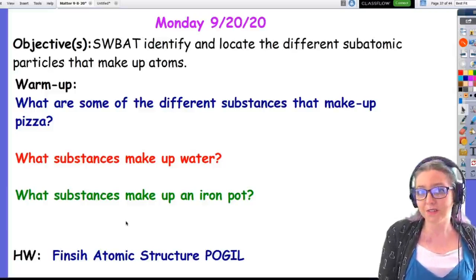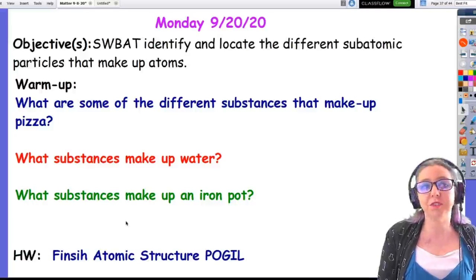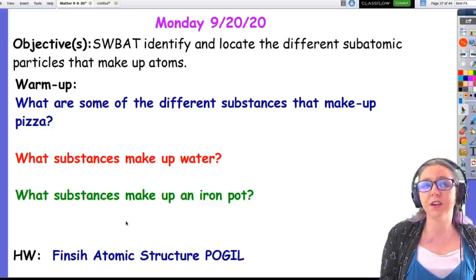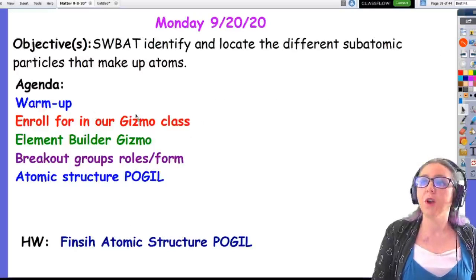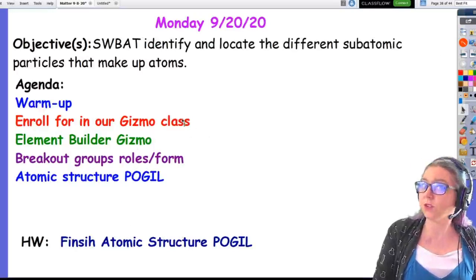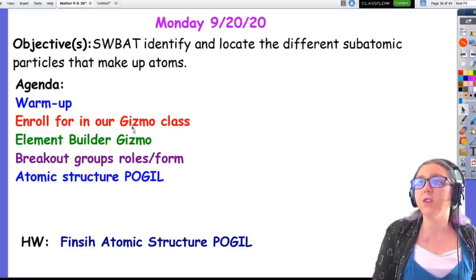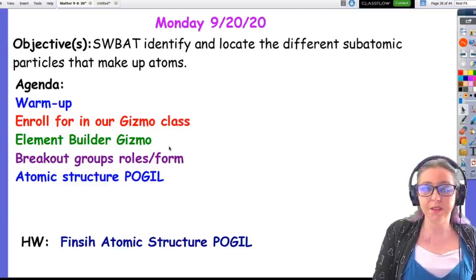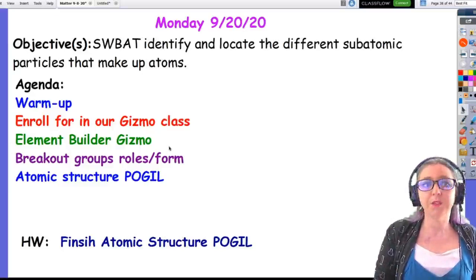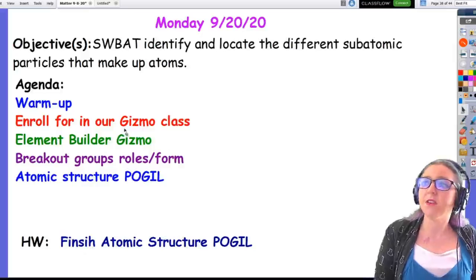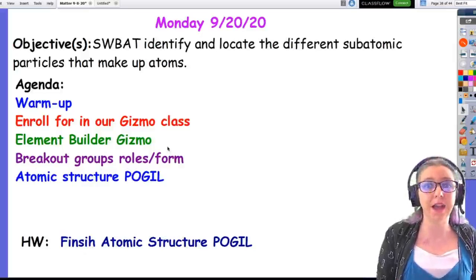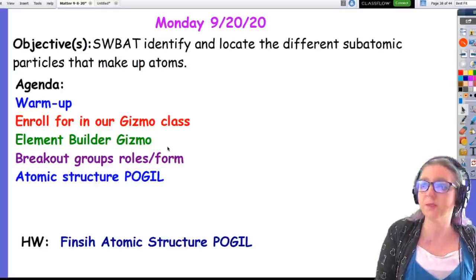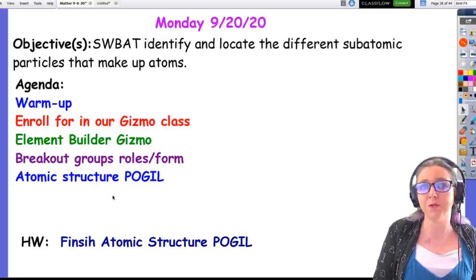Your asynchronous work that was assigned this day was to finish the atomic structure POGIL that was started in the breakout rooms during class. We all enrolled for our gizmo class on explorelearning.com. You had about 10 minutes to play with our first gizmo, the element builder. There was a worksheet that went with it, but I did not collect that for a grade. It was just there to help guide your practice, because that gizmo might very well come in handy to help you answer the questions on your atomic structure POGIL.